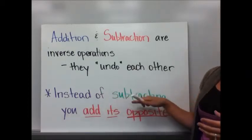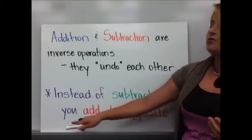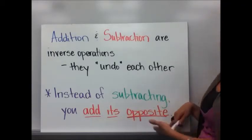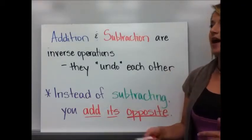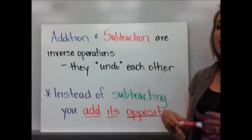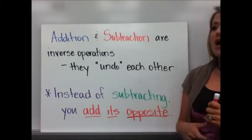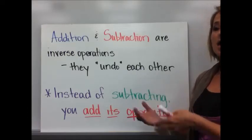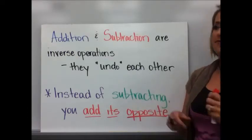So instead of subtracting, really you just add its opposite. You add that second number's opposite, whatever it is that you're subtracting. If I am subtracting 2 from something, I'm really adding negative 2. If I am subtracting a negative 5, I'm really adding its opposite, I'm adding a positive 5.